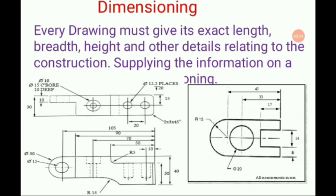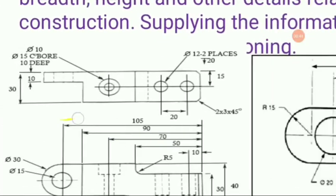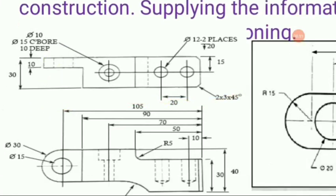You have to supply the information on a drawing. Here you can see different types of drawings with their dimensions. These are the phi signs used to denote the diameter of a circle, and circular dimensions are given by phi. Angular dimensions are also shown here.